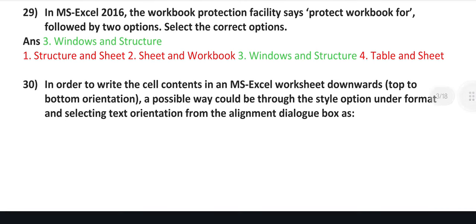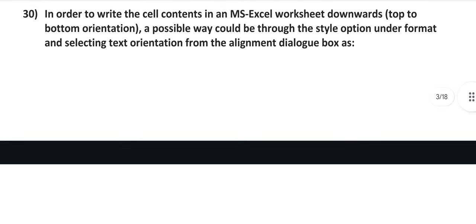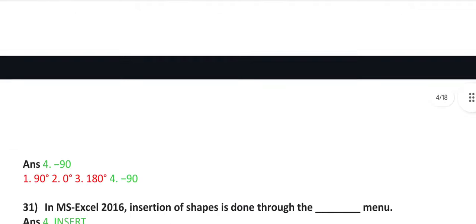In MS Excel 2016, the workbook protection facility provides two options: windows and structure. In order to write the cell contents in an MS Excel worksheet downward to the top bottom orientation, a possible way could be through the style option under format and selecting text orientation from the alignment dialog box as minus 90.